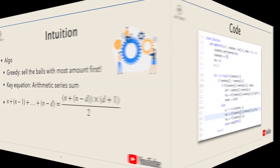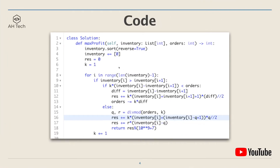Now let's look at the code. First, we reverse sort the inventory array because we want to start with the balls with the biggest amount. We add a zero at the end of the inventory array as the terminating condition. A result variable is what we will return at the end. And k is the number of colors of balls which has the biggest amount.